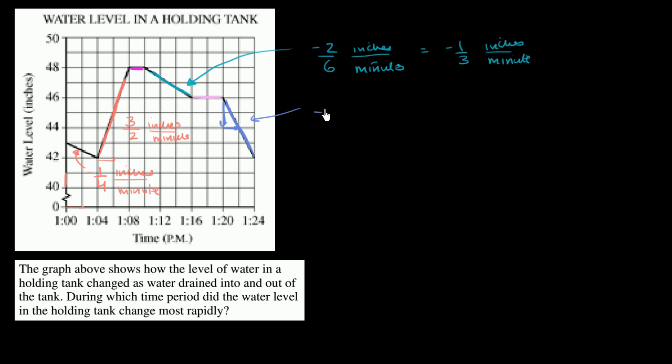So this rate of change is negative two inches for every two minutes. Or another way of saying it, it's equal to negative one inches per minute.